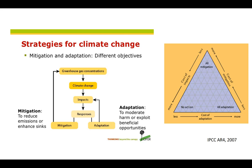There is also the option to do nothing. The triangle diagram from the IPCC Fourth Assessment Report sums up these three options. The corners of the triangle represent 100% of each of the three options — mitigation, adaptation, and no action — while areas in the middle represent combinations of approaches.